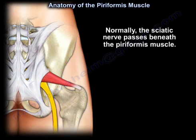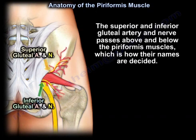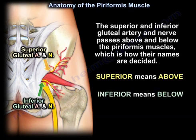Normally, the sciatic nerve passes beneath the Piriformis Muscle. The superior and inferior gluteal artery and nerve pass above and below the Piriformis — that is how their names are decided. Superior means above, inferior means below.